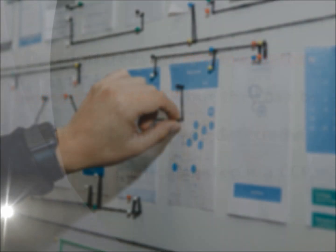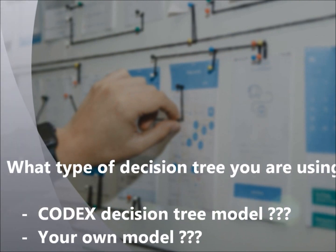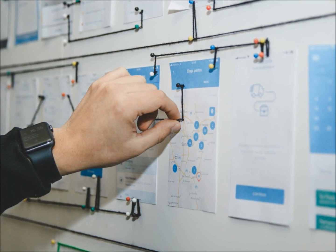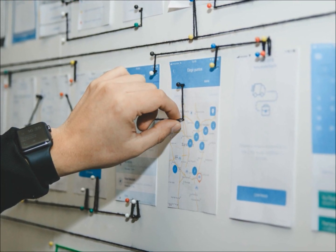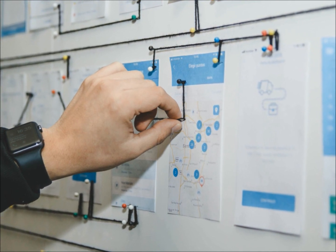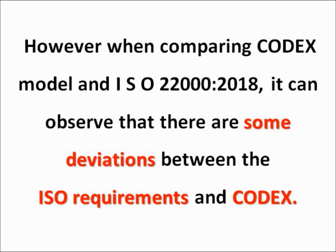What type of decision tree are you using — the Codex Decision Tree Model or your own model? Sometimes you may be confused about which type of model is more suitable for ISO 22000:2018. However, when comparing the Codex Model and ISO 22000:2018, it can be observed that there are some deviations between the ISO requirements and Codex.